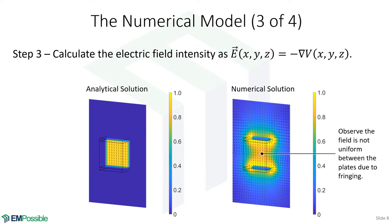Given the electric potential, we calculate the negative gradient to obtain the electric field intensity. For the analytical solution, it's a uniform-amplitude field pointing from the top to the bottom plate. The numerical solution is much more interesting — the field is not uniform in amplitude, and even before reaching the edges, the fields are already starting to fringe and bend. There are intense fields outside the plates as well. All of that energy outside is completely ignored by the analytical solution, and there are also non-uniform fields between the plates that the analytical solution misses.